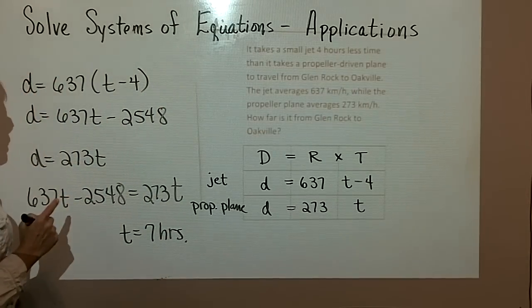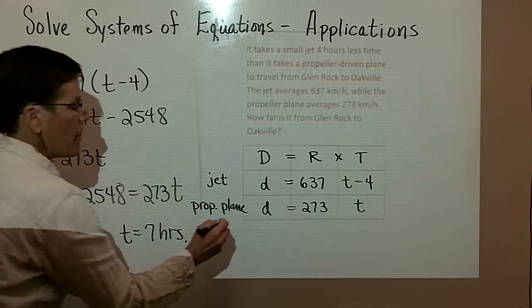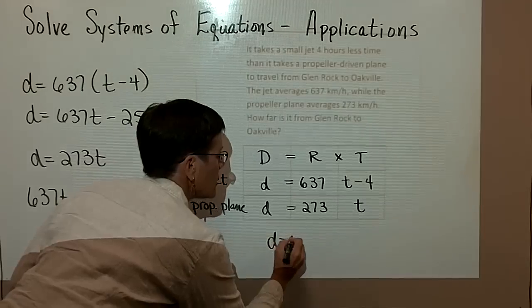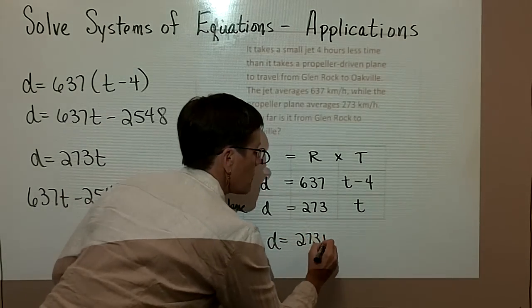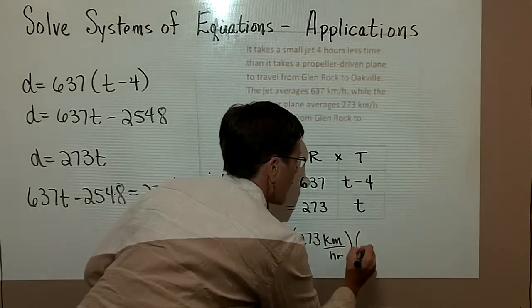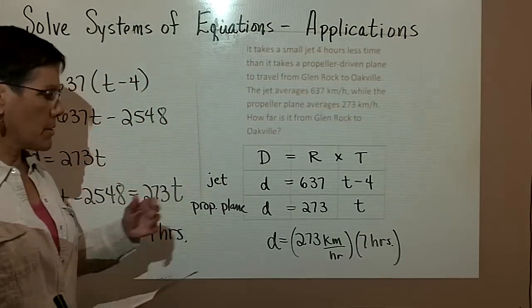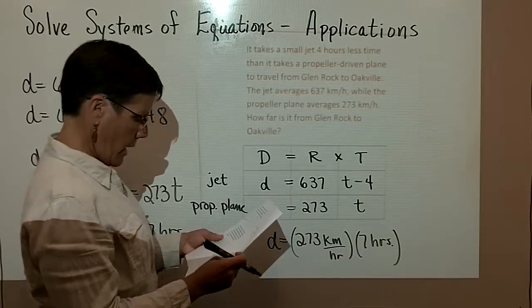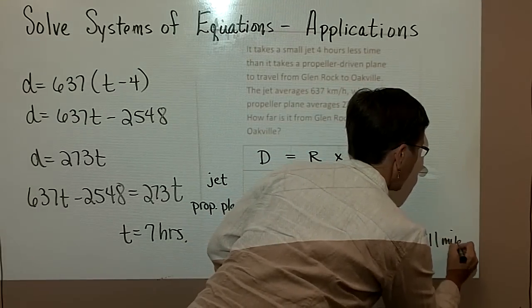What we really need to know though is how far the plane travels. If T is seven, then D, the easiest place to put it, is 273 kilometers per hour times seven hours. You can do it in the first equation as well. I'm just going to do it in this equation and I've got that the distance turns out to be 1,911 miles.